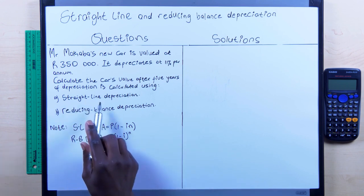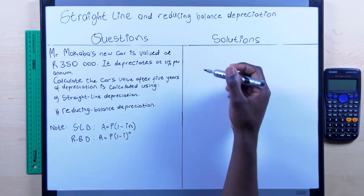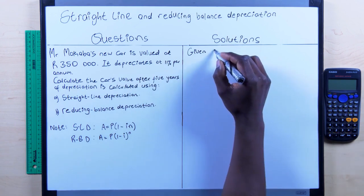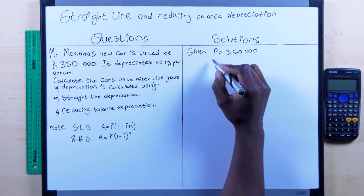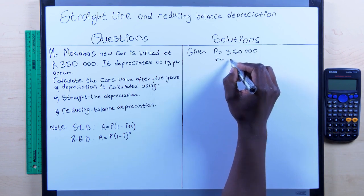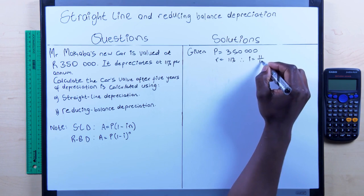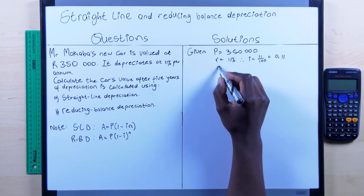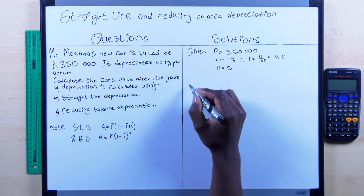That when they say Straight Line Depreciation, once they give you the keyword Straight Line, which means that it's simple interest with just a negative sign. And of course, reducing balance is the compound interest with just a negative sign. So, we just have to write what we're given. We are then given that P = 350,000. We're also given that R = 11%. Therefore, i = 11/100, which then gives you 0.11. We also know that N = 5 years. Now that we have that, let's go and substitute number A.